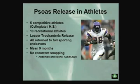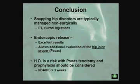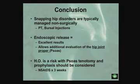Psoas release in athletes has been documented in collegiate and high school athletes. The lesser trochanter release is actually a larger release — about 75% of the tendon involved distally, as opposed to 50% from the peripheral compartment — and most did well. In conclusion, snapping hip disorders are typically managed non-surgically, but when surgical management is needed, there are very nice arthroscopic procedures available. HO is definitely a risk with psoas tenotomy, particularly from the lesser tuberosity approach.